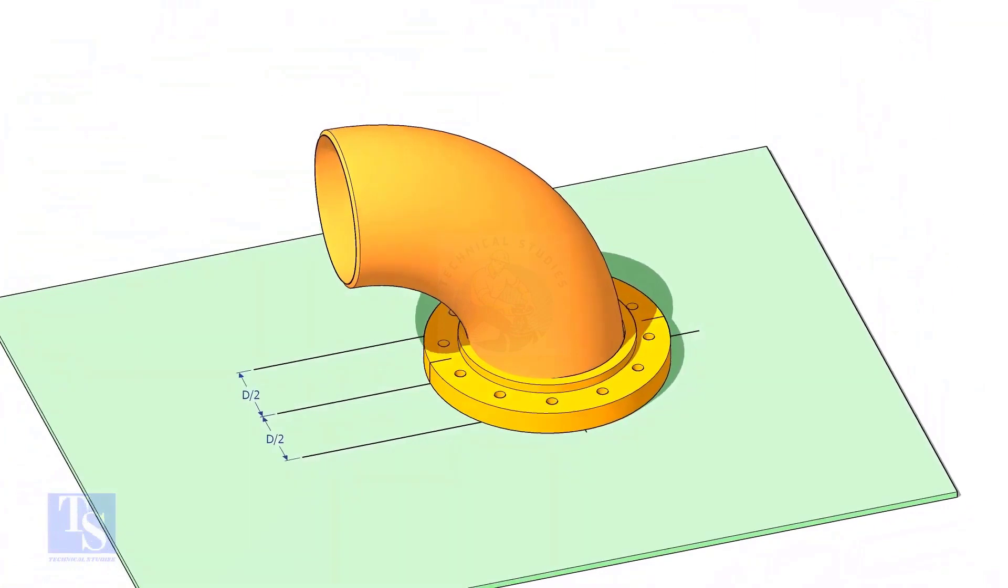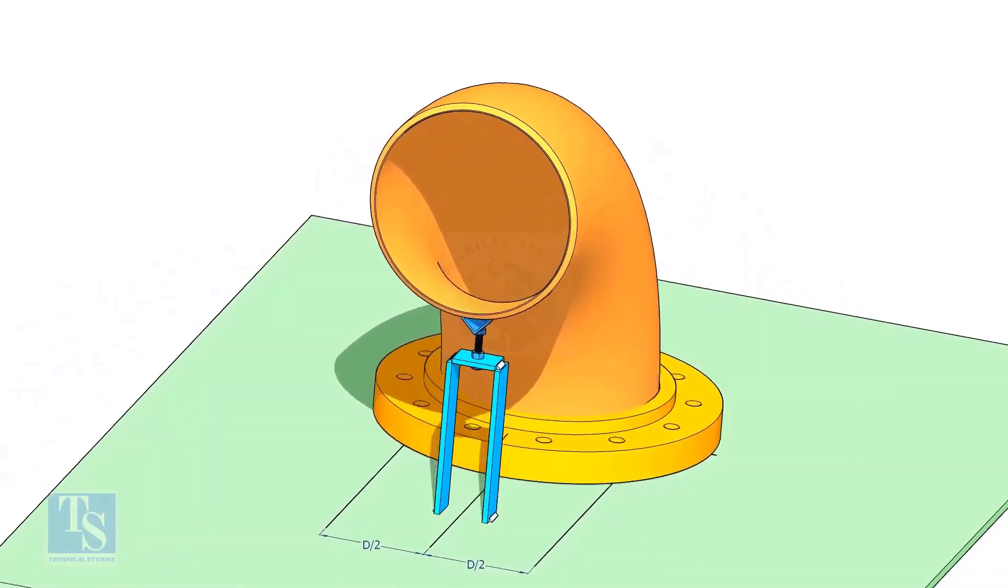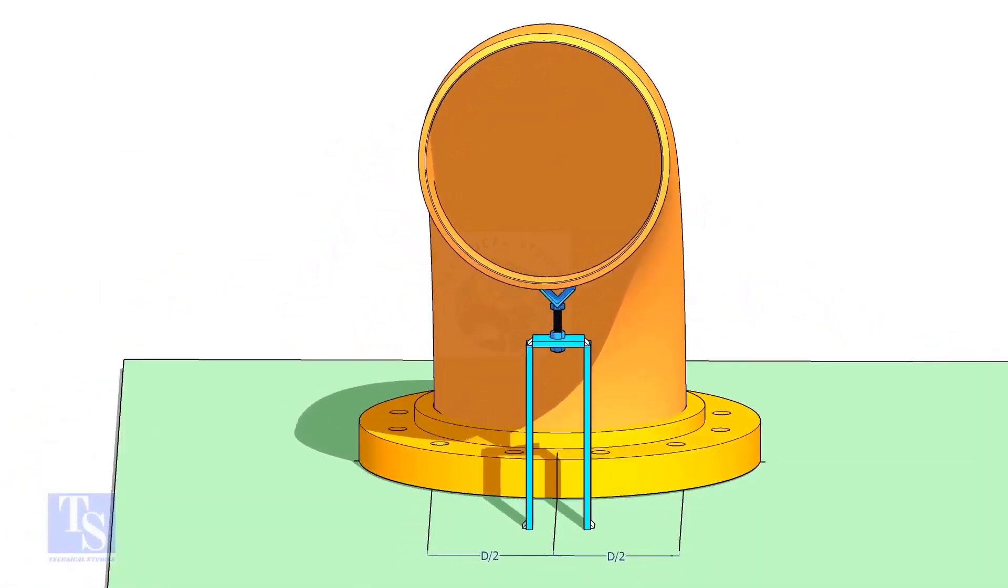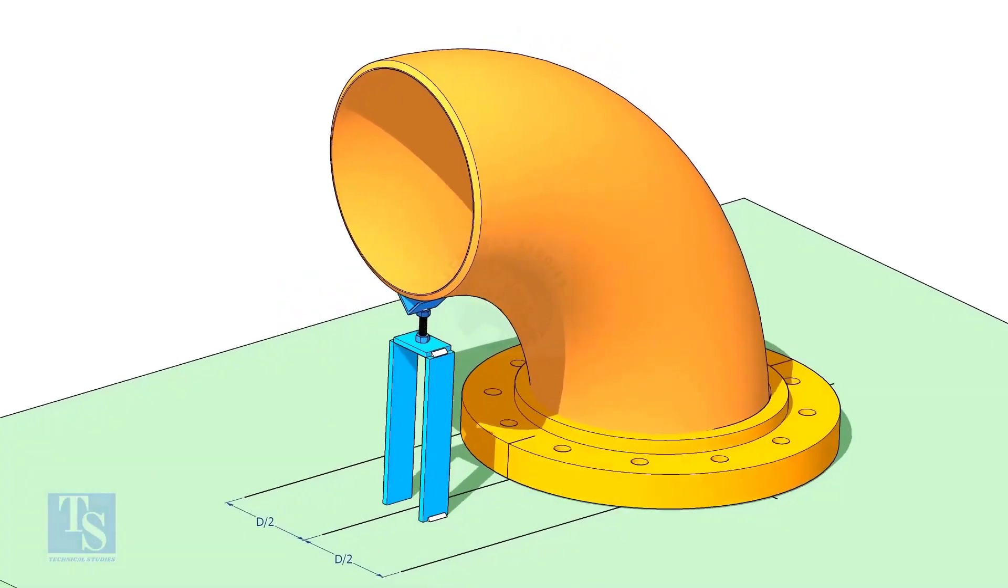Put the elbow in the flange. If required, tack weld the screw jack below the elbow face as shown. Adjust the height of the bolt and level the face of the reducer.